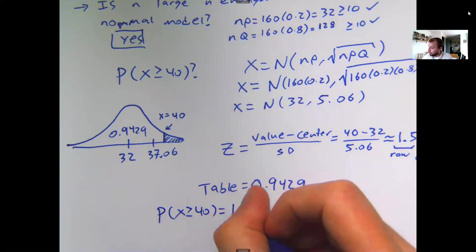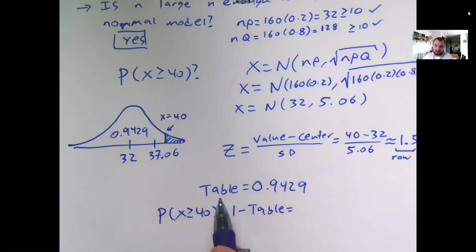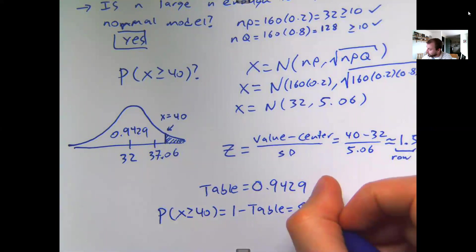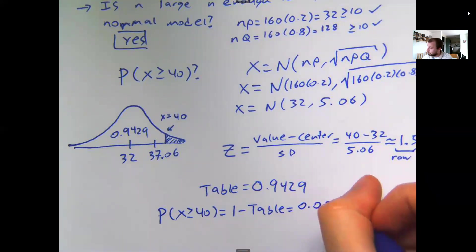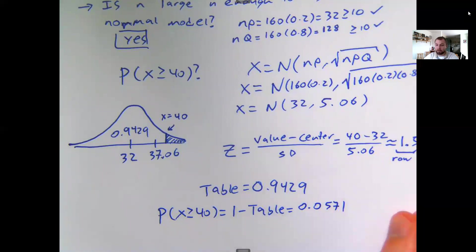The opposite of to the left is to the right, so 1 minus. And doing so gives me 0.0571 or so. So there's about a 5.71% chance that I win 40 out of 160 lottery scratchers, assuming that the true probability is 20%.